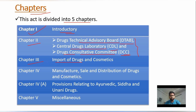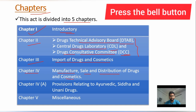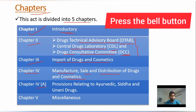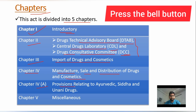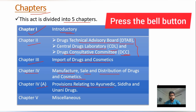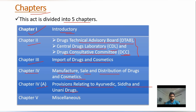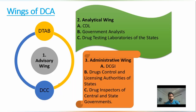Chapter Three covers import of drugs and cosmetics. Chapter Four covers manufacture, sale, and distribution of drugs and cosmetics, and also contains provisions relating to Ayurveda, Siddha, and Unani drugs. Chapter Five contains miscellaneous information.